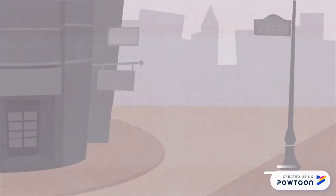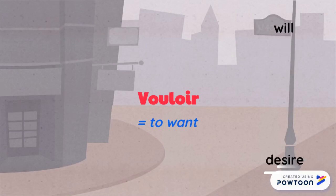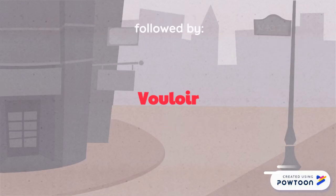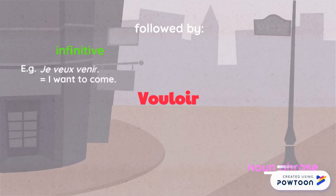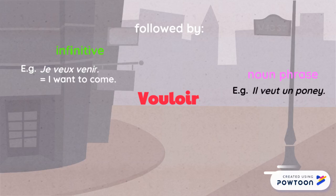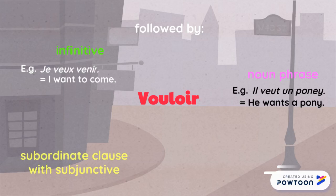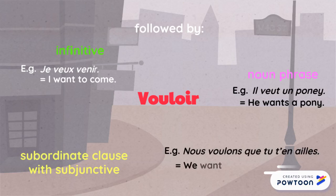The first one is vouloir. It means 'to want.' It can express the will or the desire. It can be followed by an infinitive — for instance, 'je veux venir' (I want to come) — a noun phrase, for example, 'il veut un bonnet' (he wants a pony), or a subordinate clause with a subjunctive. For instance, 'nous voulons que tu t'en ailles' (we want you to leave).